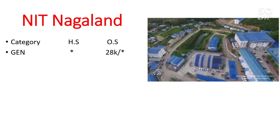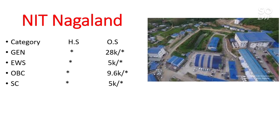Next is NIT Nagaland. For home state there is no seat reserved for General candidates; other state male 28,000, no female. EWS other state 5,000, no female. OBC other state 9,600, no female. SC other state 5,000, no female. For ST: home state male 11,000, female 17,000; no other state reservation.